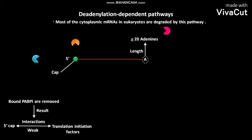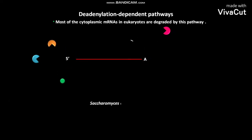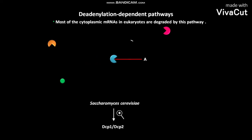The decapping enzyme then binds to the 5' cap of the deadenylated mRNA and removes it. In Saccharomyces cerevisiae, the decapping enzyme is DCP1 or DCP2. The 5' to 3' exonuclease then degrades the decapped and deadenylated mRNA.